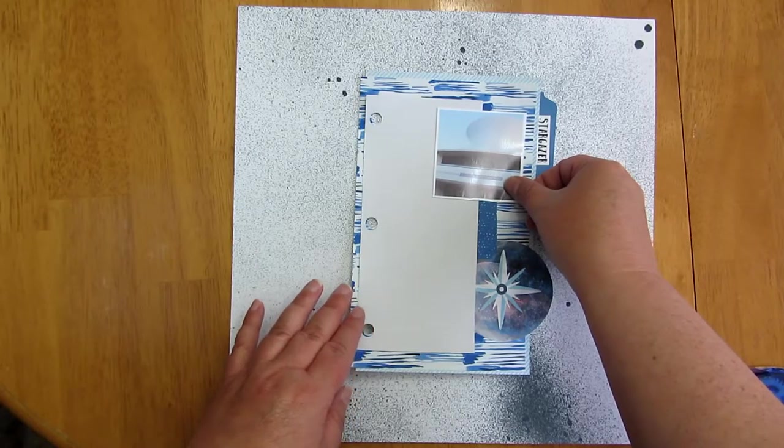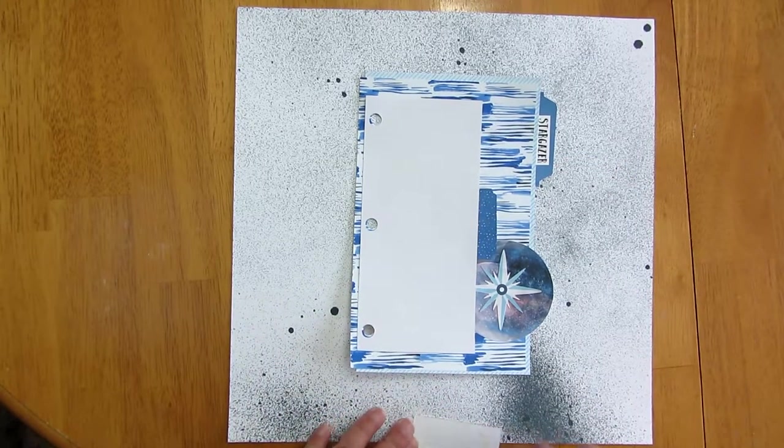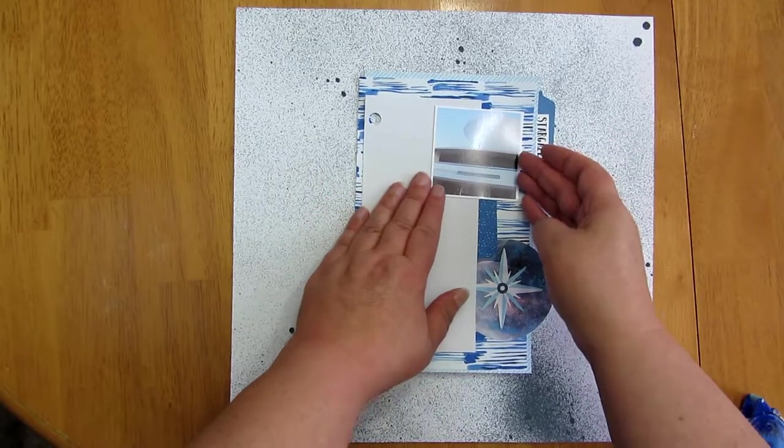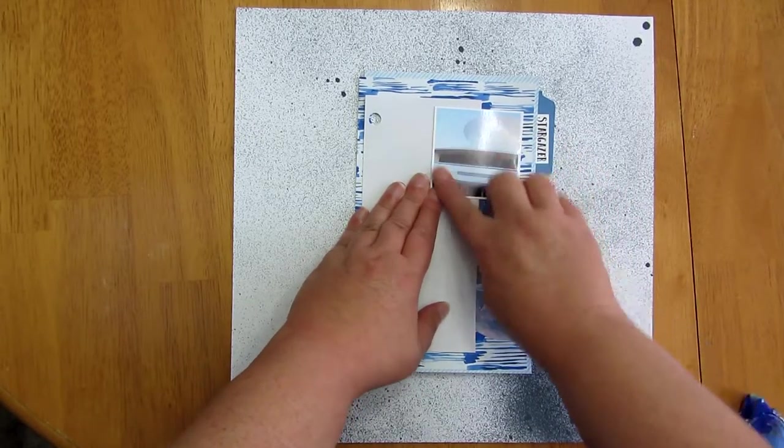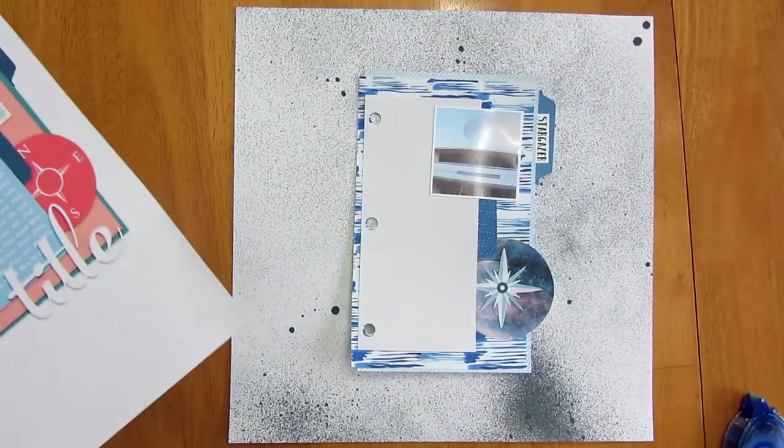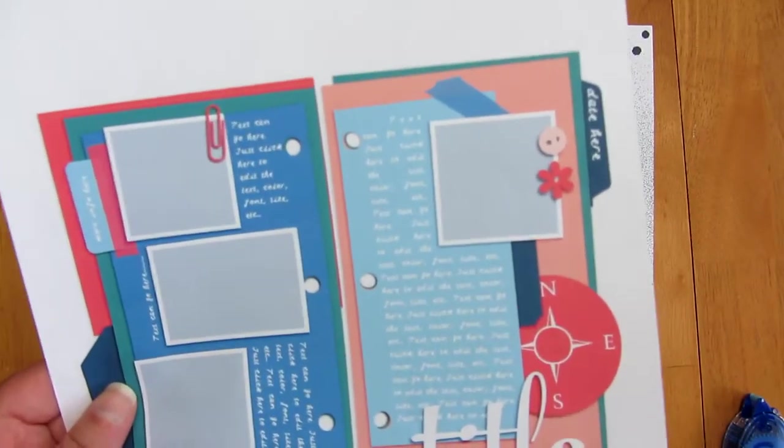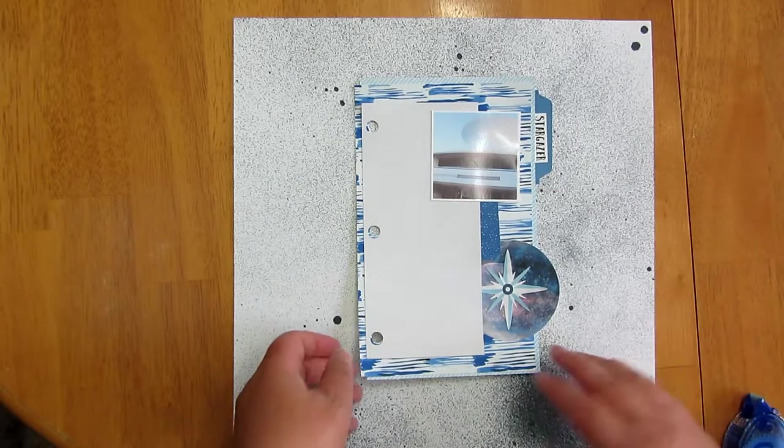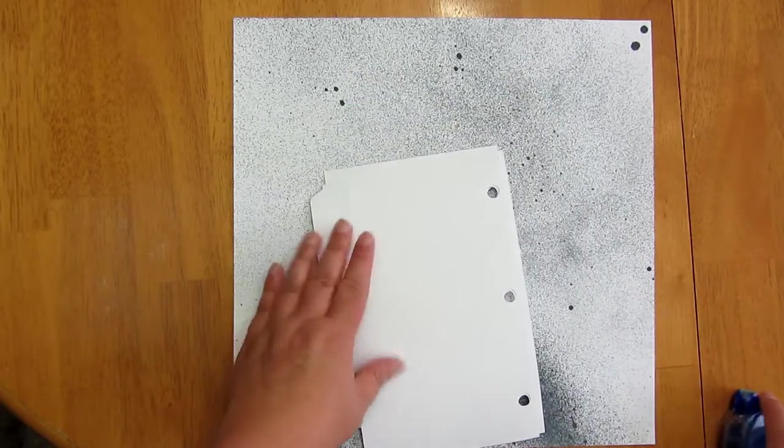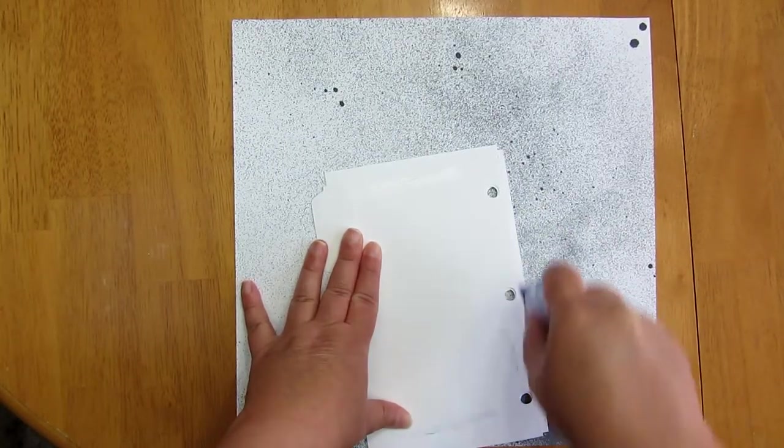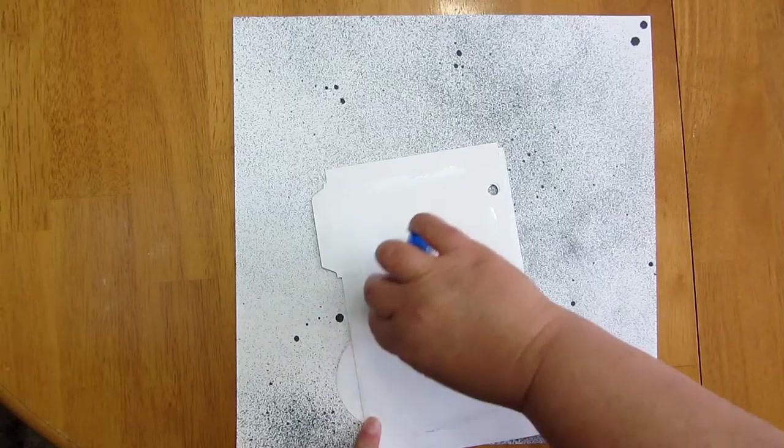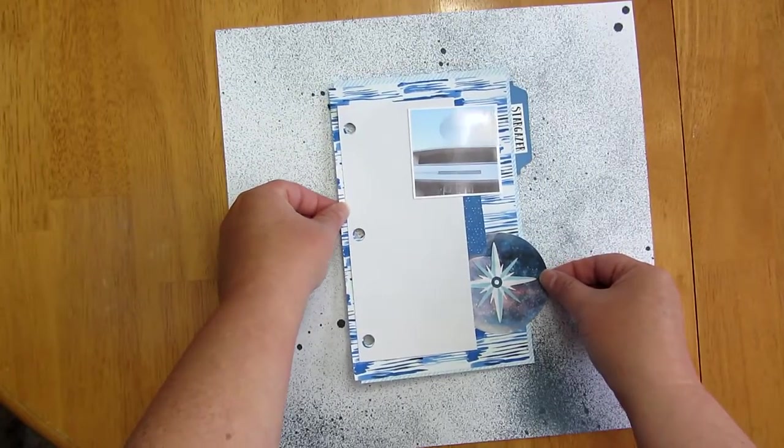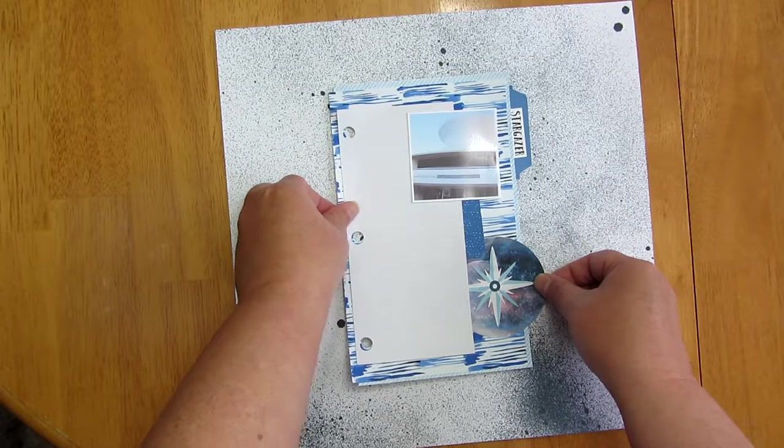And, then here's the picture I'm going to use. It has a white mat in the original template. I've just made a white border on my photo. So, it's going to go right there. Again, a little off kilter. And, then that's pretty much, if you look, kind of the elements from the template. I am not going to do a separate title. I'm just going to let Stargazer be my title. And, I'm going to go ahead and adhere this down to the paper.